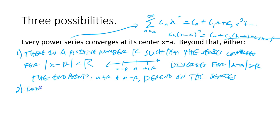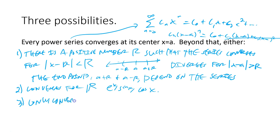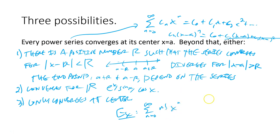The second option is that it converges for all real numbers — that would be like e^x, sine x, cosine x. Those converge for any real number you plug in. The third option is it only converges at the center. An example of that would be the sum from n equals 0 to infinity of n! · x^n — definitely a power series, but n factorial keeps getting bigger and bigger, so it's going to keep diverging. So one of these three things happens, and number one is definitely the most interesting, where you have some radius around the value where it works.